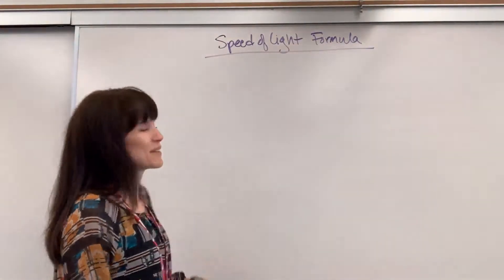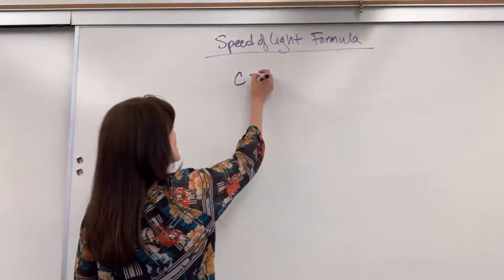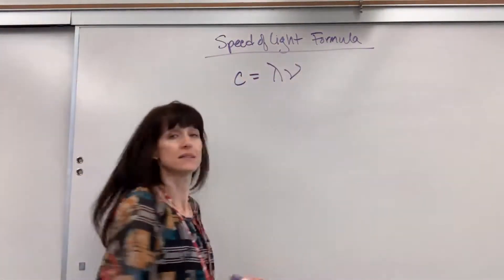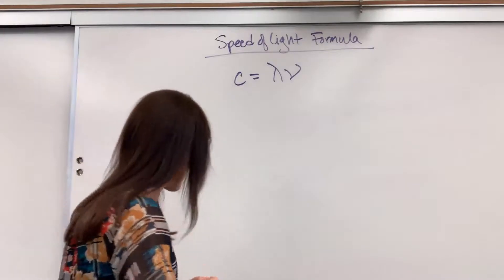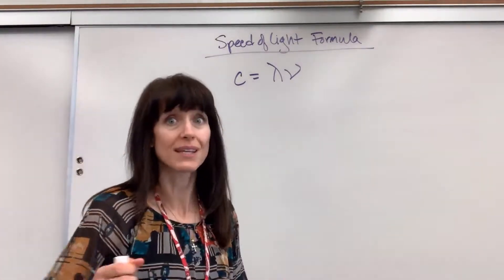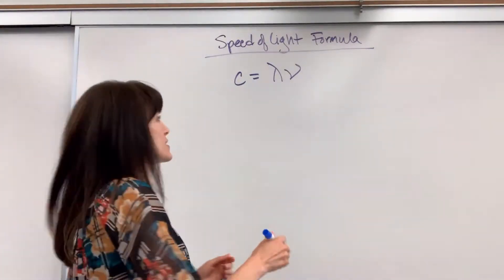So here we have the speed of light formula. C equals lambda times nu. So let's label everything and make sure that we attach units because units make such a difference.